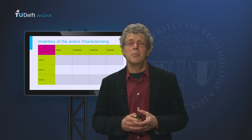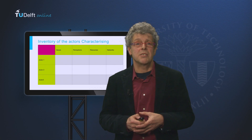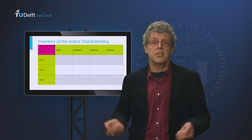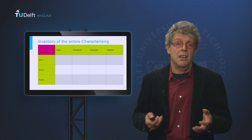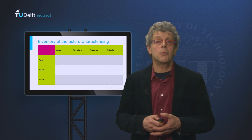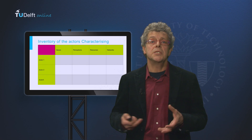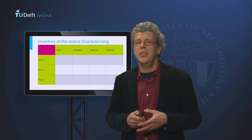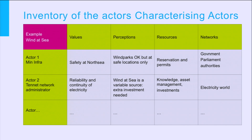Now we know whom to take along by making our short list, and we need to note down our first results. A practical way is to fill out a simple table, jotting down in the columns the values, perceptions, and resources of the actors selected. We try to see the networks they operate in. This is no longer a quick-and-dirty exercise — for information on shortlisted actors, you have to do research. Desk research to start with, but maybe also by interviewing people. Nowadays you start by exploring the website of the agency, company, or NGO to find their mission statements, values, perceptions, and means. You check whom they cooperate with, download relevant documents and annual reports, and analyse them. You learn about the players in your game.